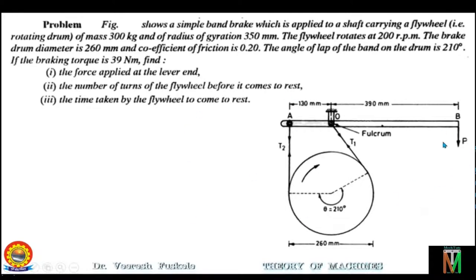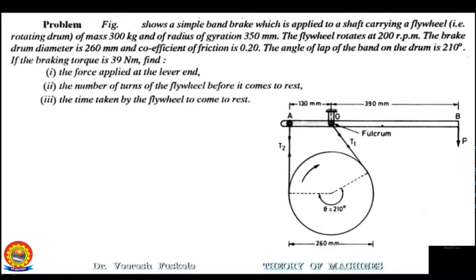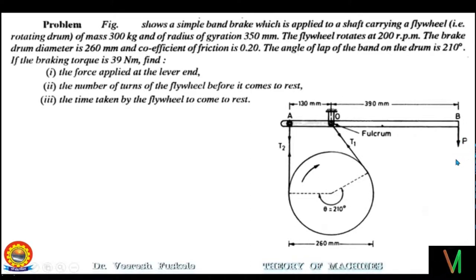Now let's understand the figure. For a simple band brake, one end of the band should be connected to the fulcrum, whereas the other end of the band may be connected to the lever either towards the same side as force P or the opposite side. Here the other end is in the opposite direction; therefore, the applied force will be in the downward direction as shown in the figure. This is the point to be noted.